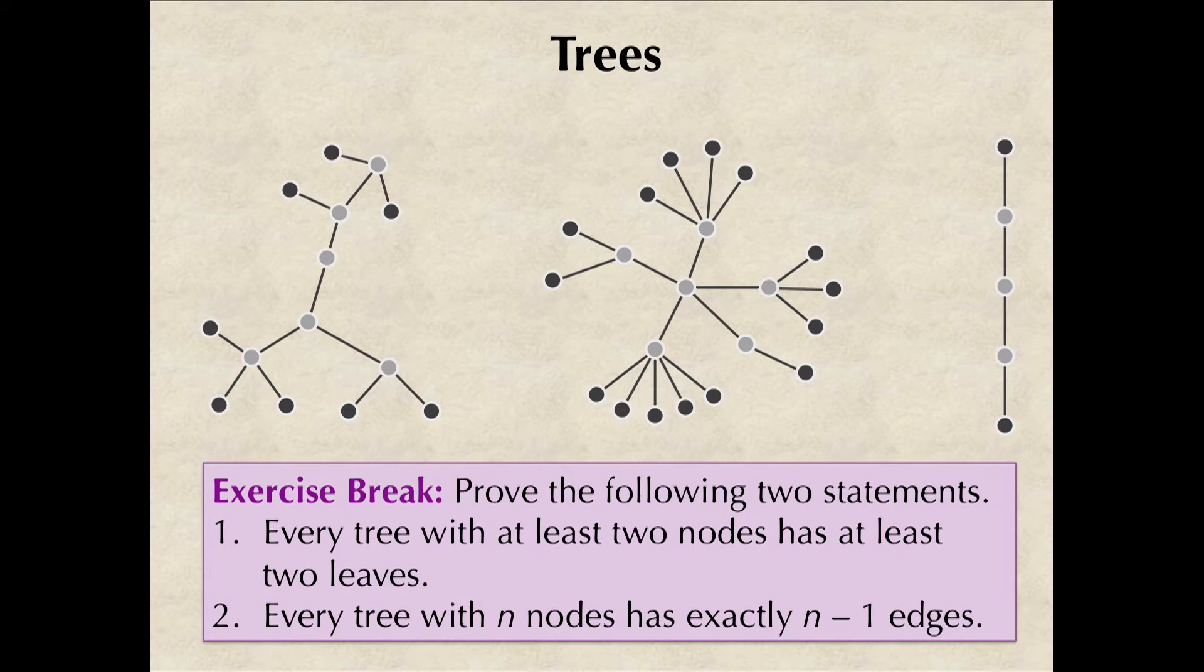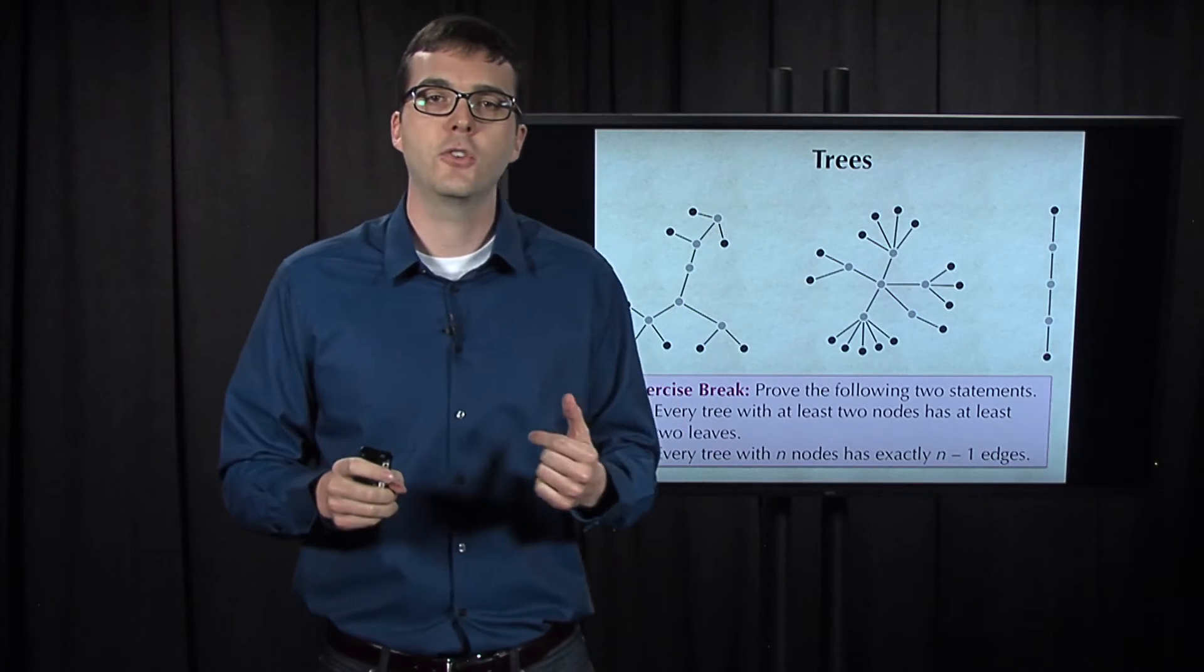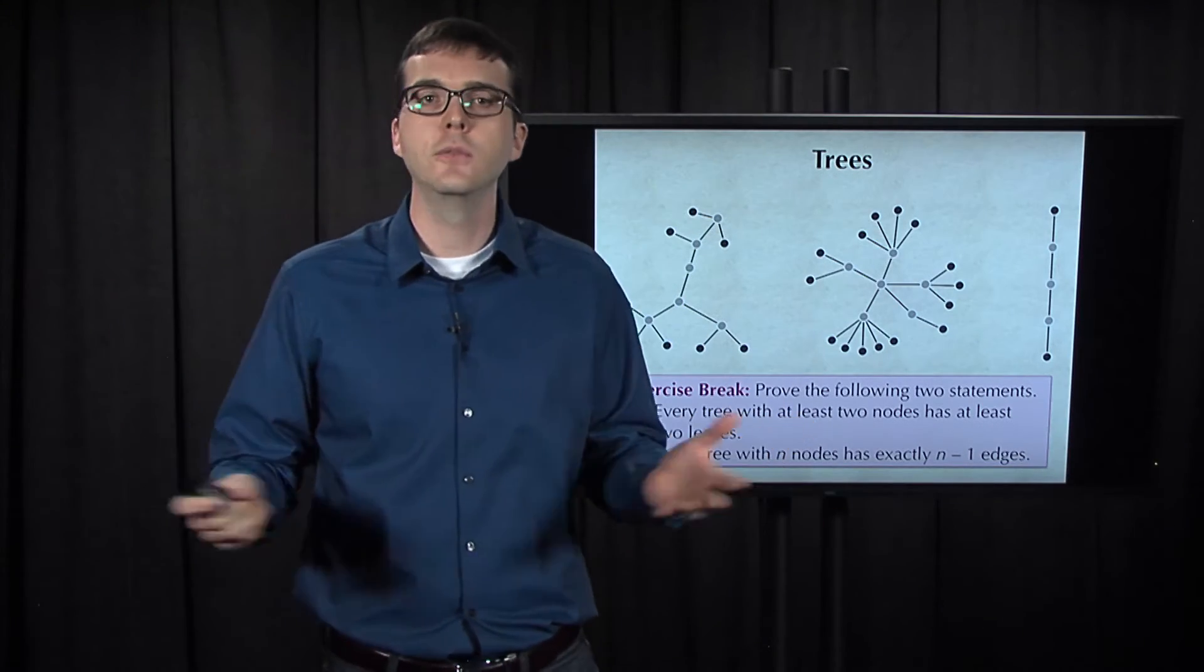Now, trees come in all different shapes and sizes, but the fact that they are connected and acyclic, by definition, leads to some common properties. For example, we can always find two leaves in a tree as long as the tree has at least two nodes.